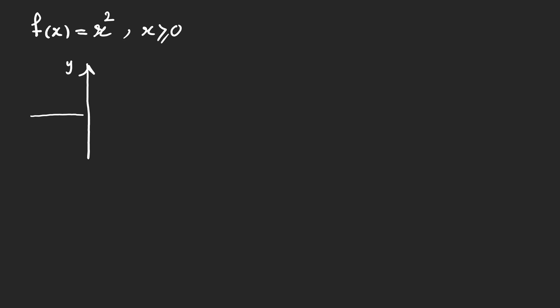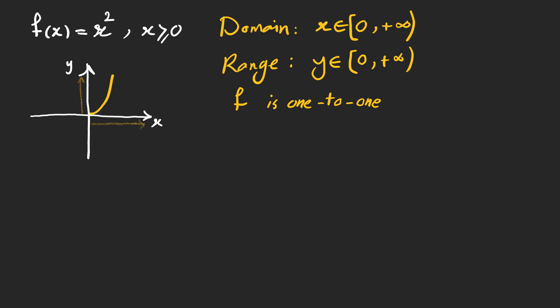Take f of x equals x squared as an example. The domain is from zero to infinity and the range is from zero to infinity too. As you can see, it is a one-to-one function. So, we can write its inverse as a function. What we need to do is to replace x and y with each other and find y in terms of x. The expression shows the inverse function. Its graph is illustrated in blue.